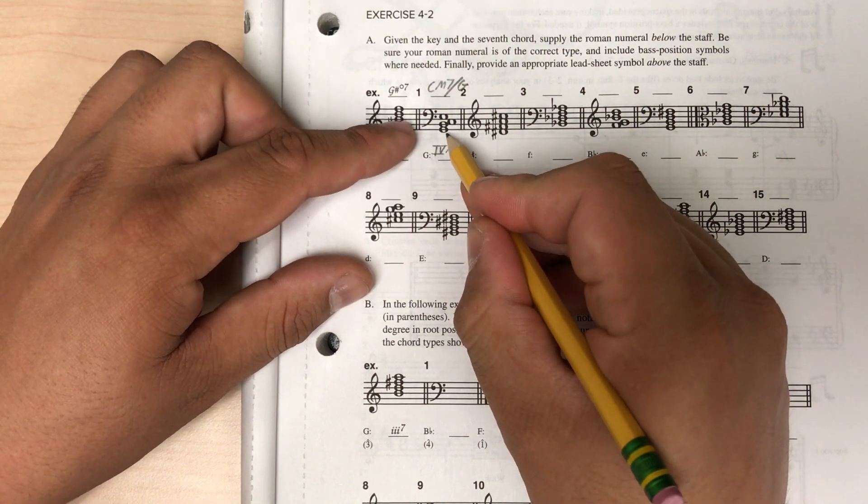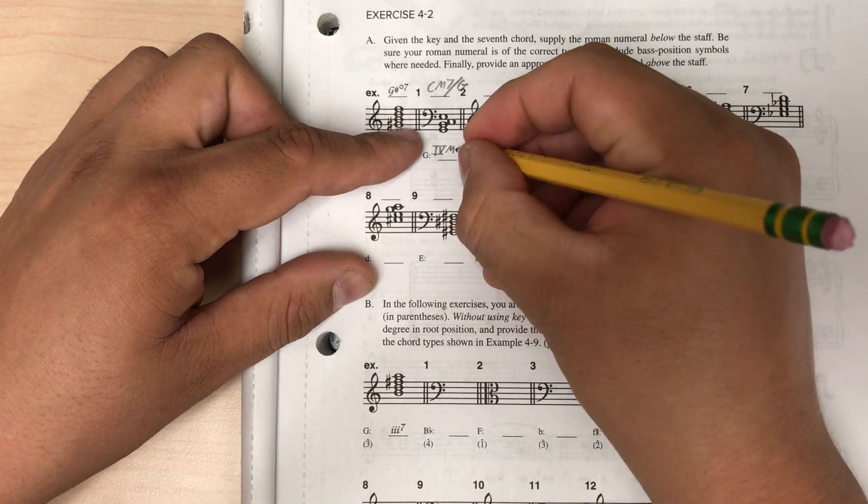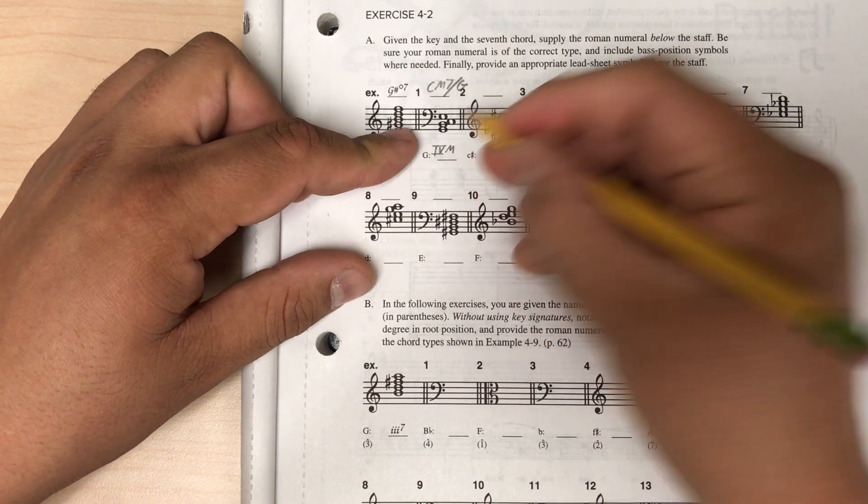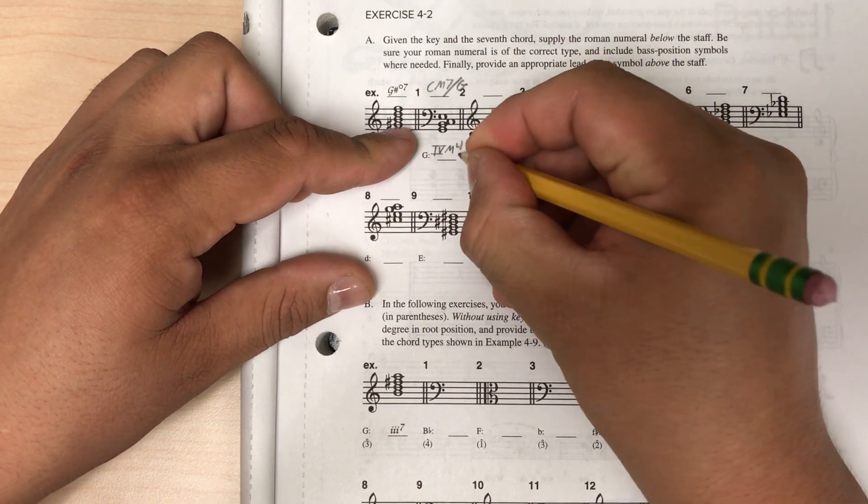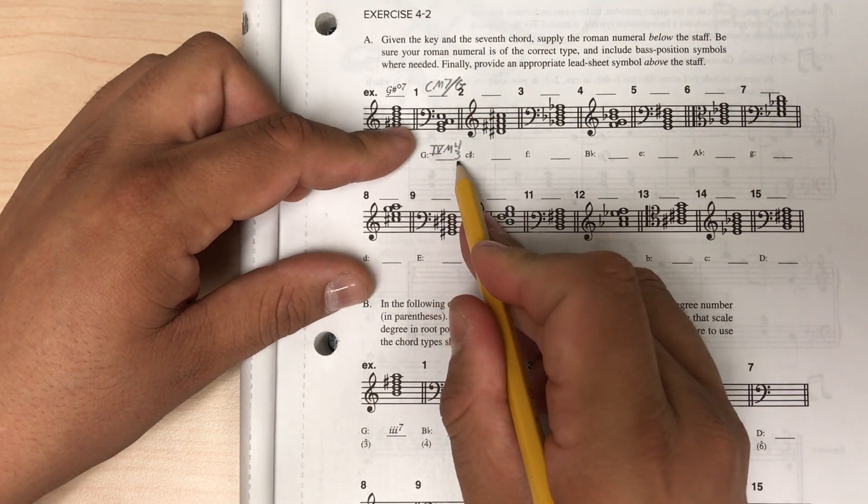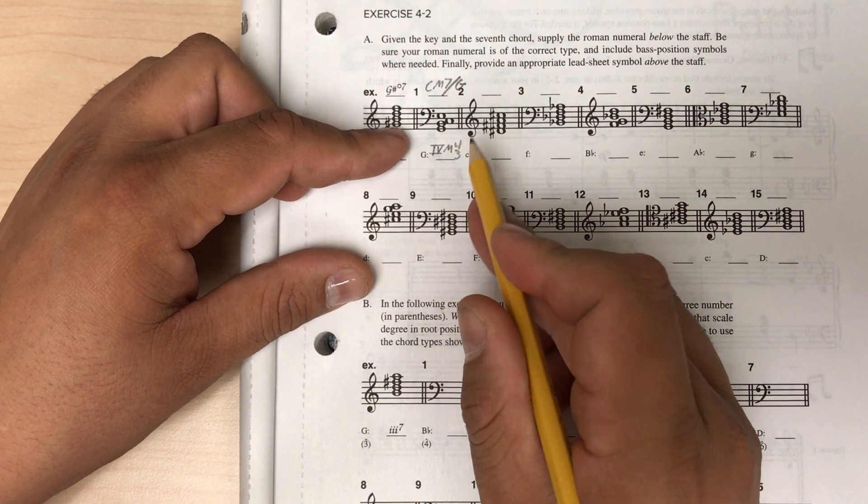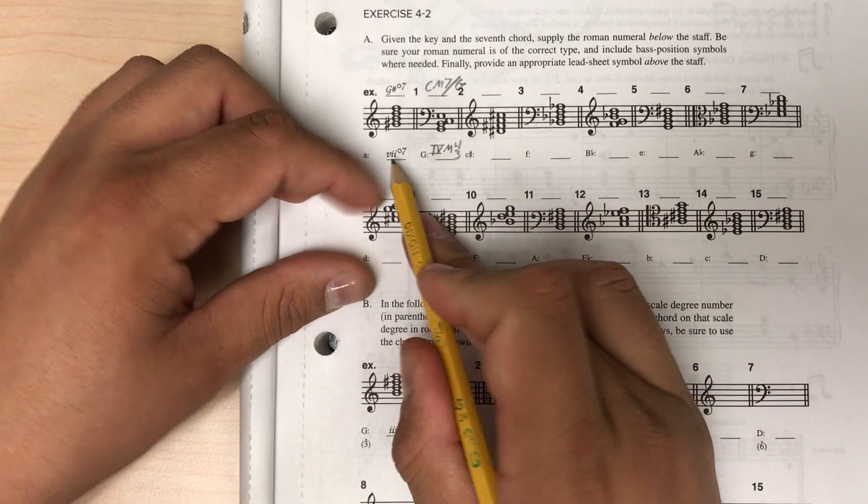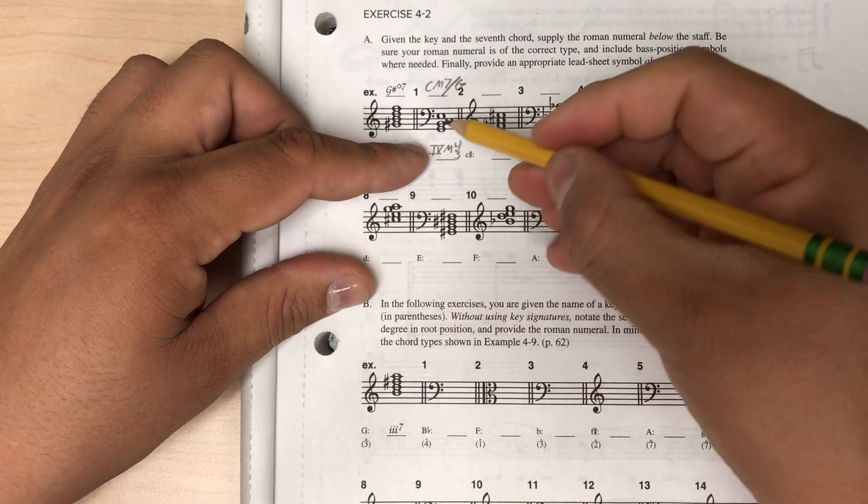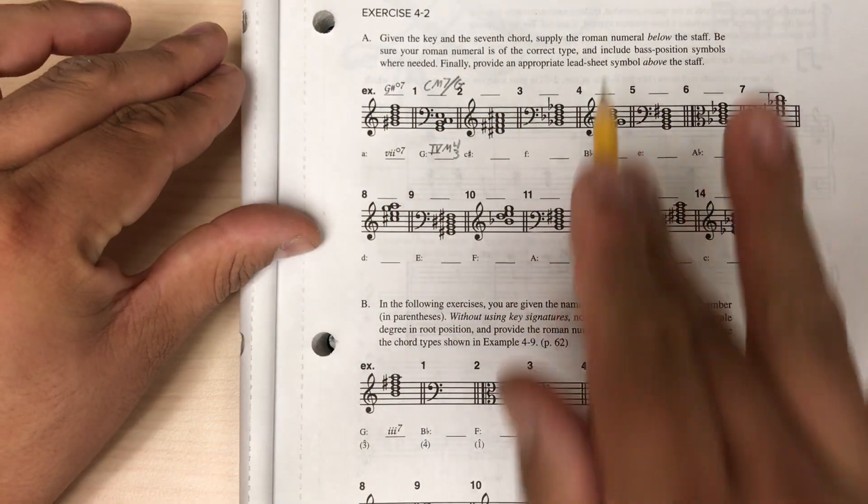If this was in root position, I'd just write the seven, but since it's not in root position, since the fifth of the chord is in the base, and this is a seventh chord, the base position symbol for fifth in the base of a seventh chord is 4-3. So this is a 4 major 4-3. Just be careful with your base position symbols to not get your base position symbols for seventh chords confused with triads. If this were a triad in second inversion, it would be 6-4, but since this is a seventh chord, we use 4-3.